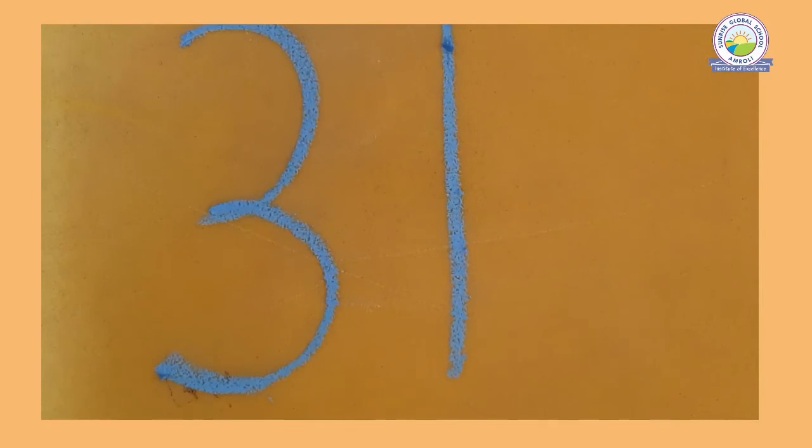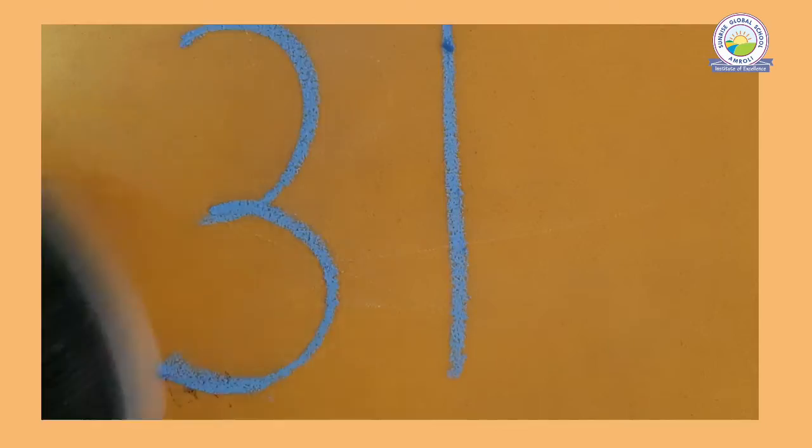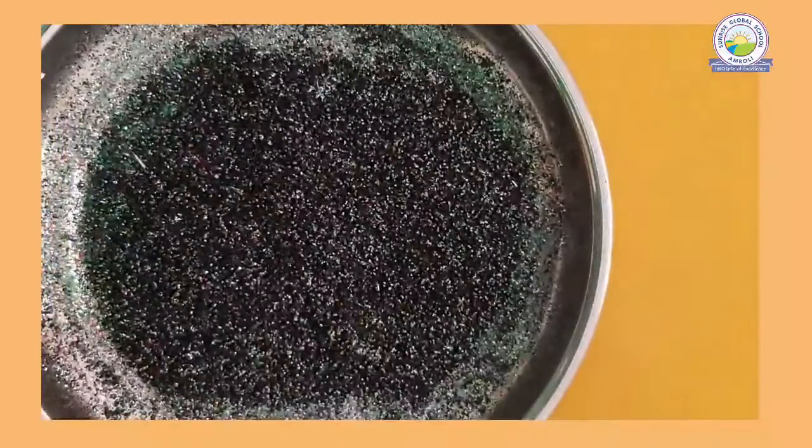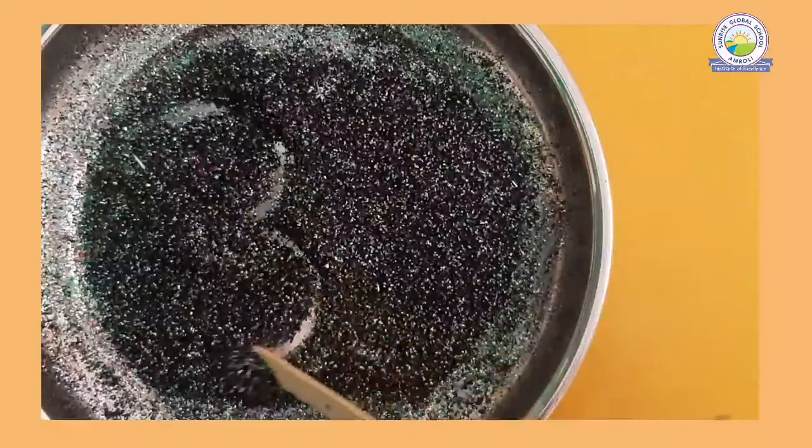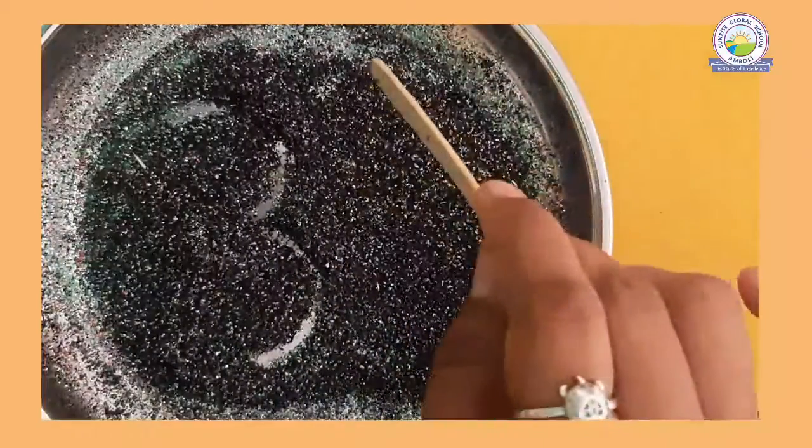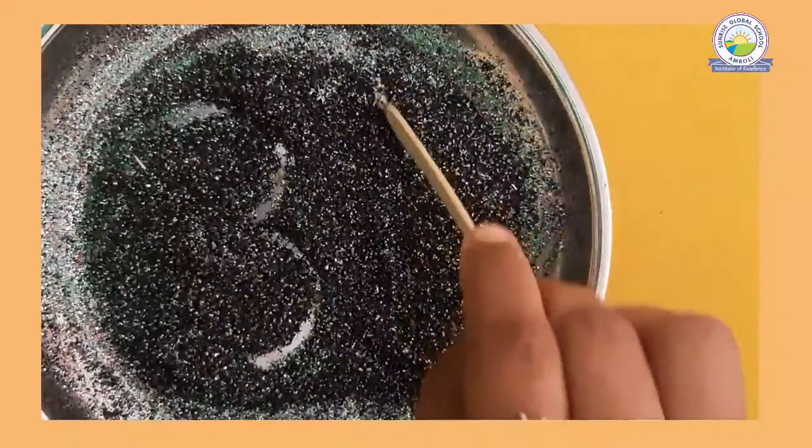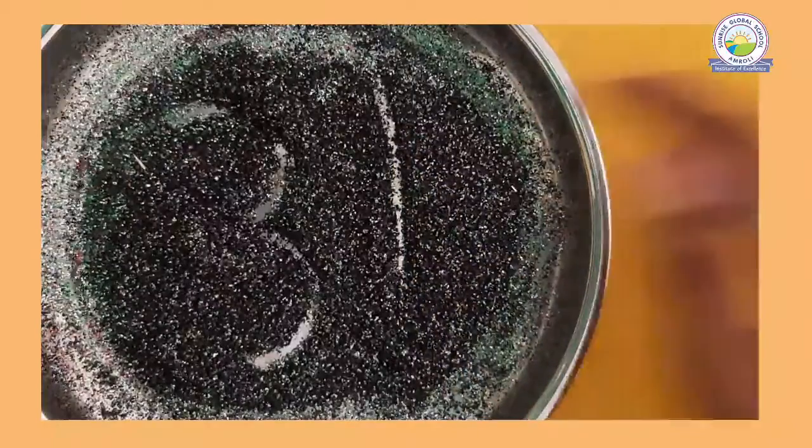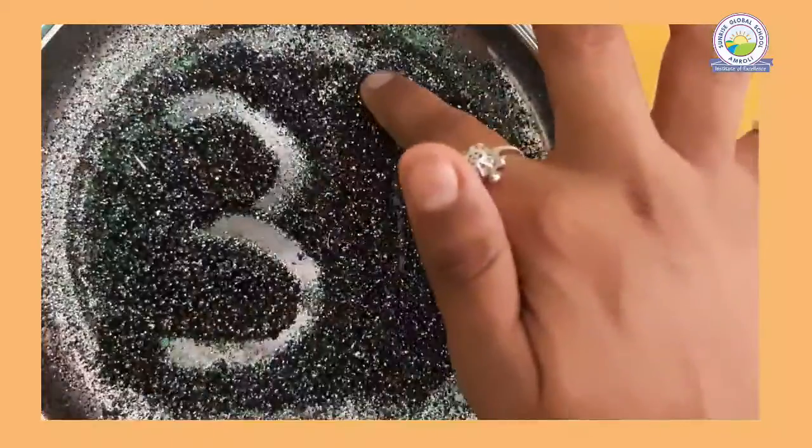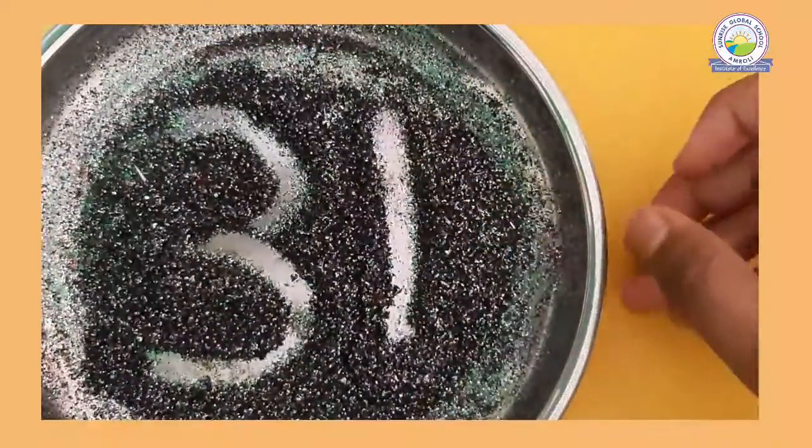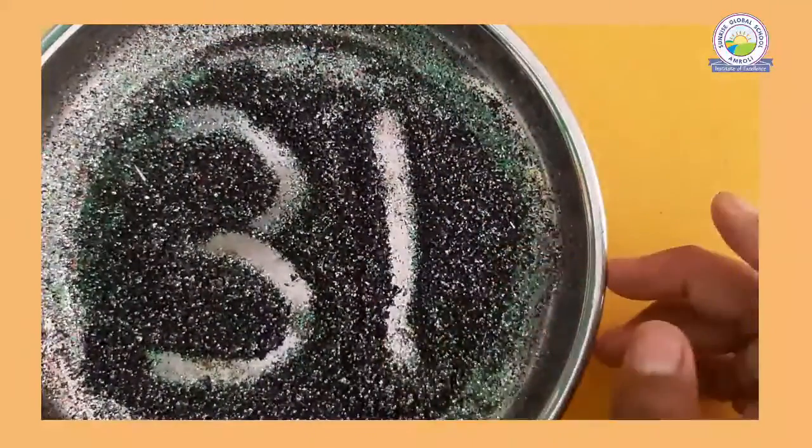Now see, I am taking the glitter. Now we will write on that. Half circle, then one more half circle. 3 and 1, 31. 3 and 1, 31.